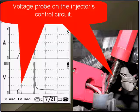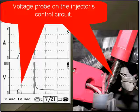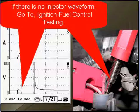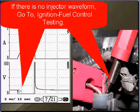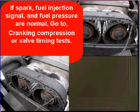If you don't have a low current probe, or just because you want to, use a voltage probe on the injector's control circuit. If there is no injector waveform, go to ignition fuel control testing. If spark, fuel injection signal, and fuel pressure are normal, go to cranking compression or valve timing test.